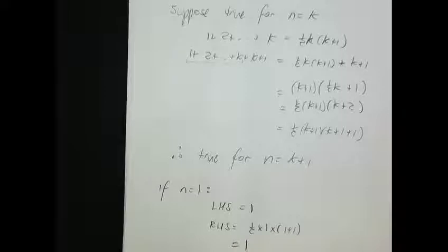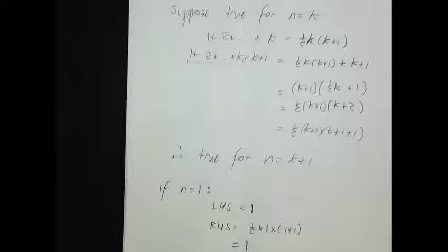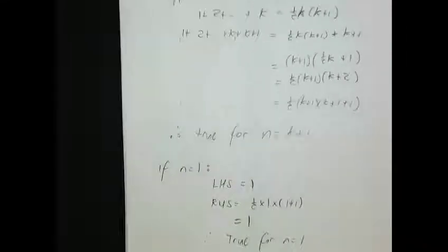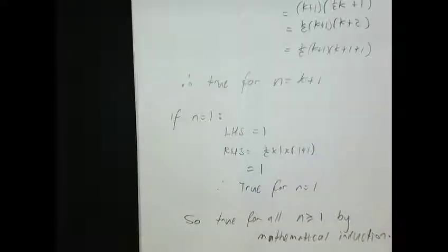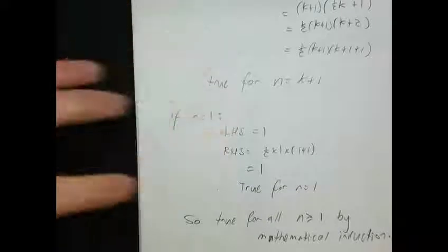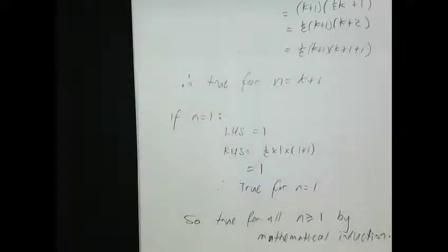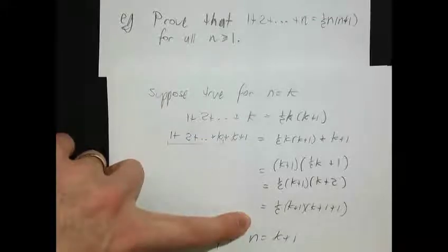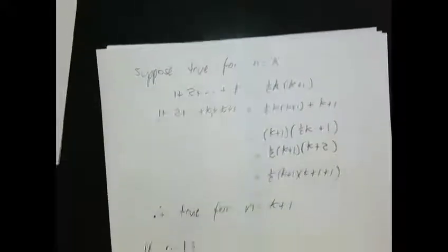Therefore it is true for all N≥1 by mathematical induction. One key thing to notice about this proof is that it was a statement involving an equals sign. To prove a statement about an equals sign, what typically happens is you start at one end, go equals, equals, equals, and end at the other end—that's what a proof of an equality looks like.